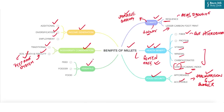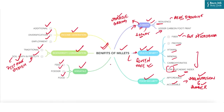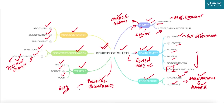Millets are also versatile — they can be used as feed and fodder for animals and as food for humans, and can be used in a variety of dishes from breakfast to dinner, including snacks and desserts. Another important benefit is political significance: millets are grown mainly in low-income and developing countries in Asia and Africa, forming part of the food basket of about 60 crore people globally. By proposing the resolution to celebrate 2023 as the International Year of Millets, India positioned itself as a leader, similar to its International Solar Alliance initiative.